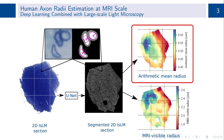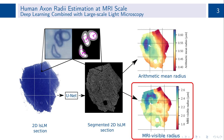First, the arithmetic mean radius, which is commonly reported in histological studies. And second, the MRI visible effective radius, which is strongly weighted towards large axons.